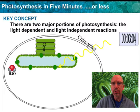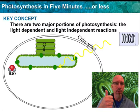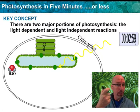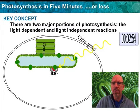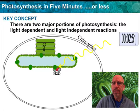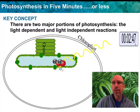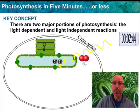Here's the first thing that happens in the light-dependent reaction. We need chlorophyll and light for energy. So here's the water molecule — water comes into the chlorophyll, and the first thing that happens is it splits the water into hydrogen ions, or protons, and oxygen.